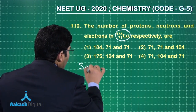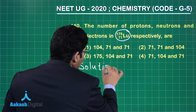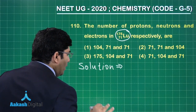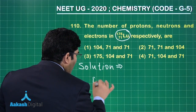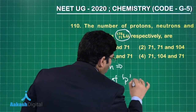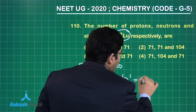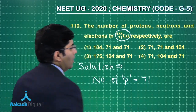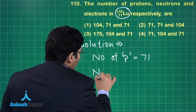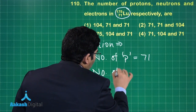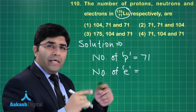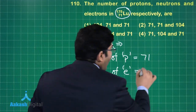Let's move to the solution. The atomic number is the number of protons, so the number of protons is equal to 71. The number of electrons is equal to the number of protons, so it is also 71.